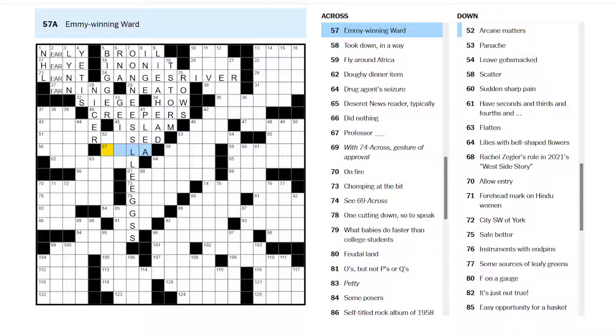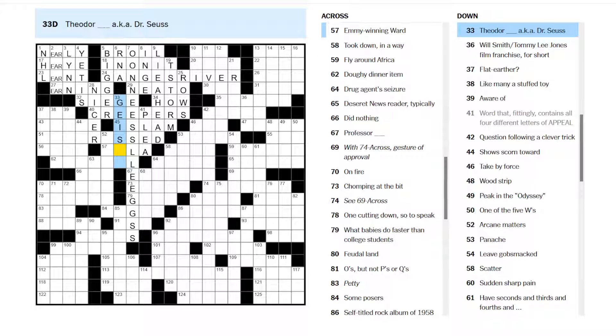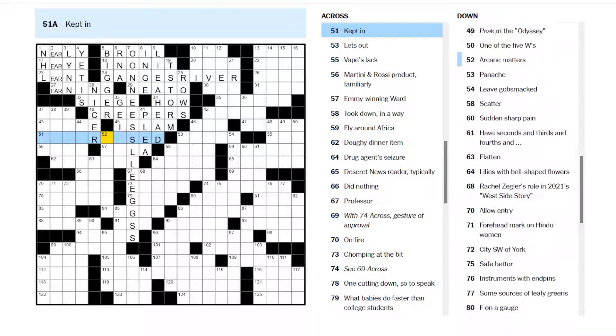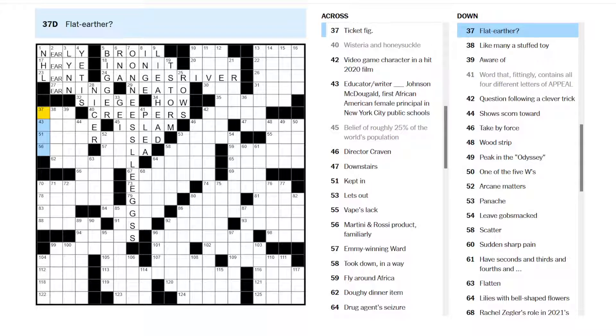Word that fittingly contains all four different letters of appeal. His plea. Those are both things you can do in court. Emmy-winning ward. Not sure. Theodore something, a.k.a. Dr. Seuss. Theodore Geisel or something? I don't remember. Kept in. First time, you're wearing a female principal in New York City public schools. Something Johnson McDougald. I'm not sure. Flat earther, question mark? Flat earther. I don't quite get what this, what the wordplay is. Someone who lives on earth who is flat? Or something on earth that is flat? I'm not sure.